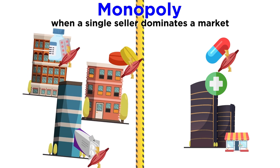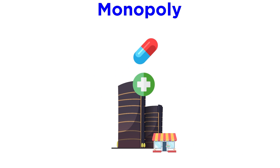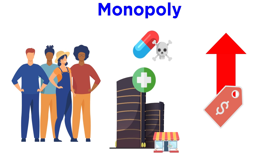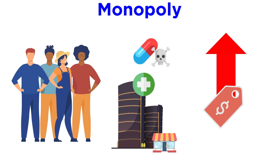The main problem with monopolies is that they can take advantage of their market power by charging high prices. In the case of the life-saving drug, the price would likely be high due to the demand, but if the one company that produced the drug could charge an unreasonably high price for it, they likely would, as their goal is to maximize profits.